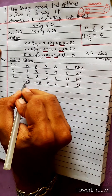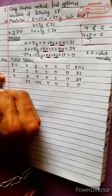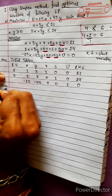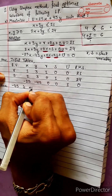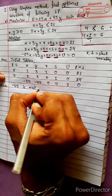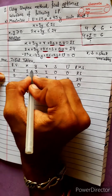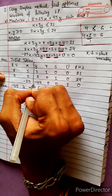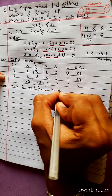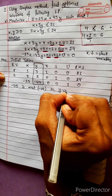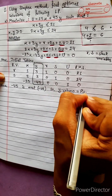Now we identify the most negative element. Minus 45 is the most negative value in the objective row. Therefore, the y-column equals the pivot column.